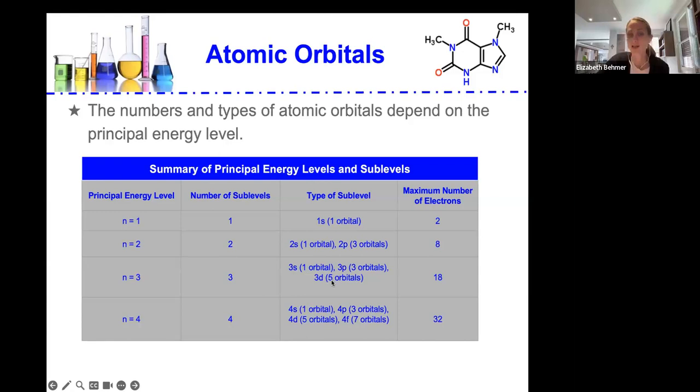And then in the 3d sub-level, there's five orbitals. And if there's two electrons in each one of those five orbitals, we're at 10. So for a total, we get 10 electrons here, plus 6 plus 2, we get a total number of 18 electrons.